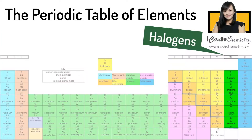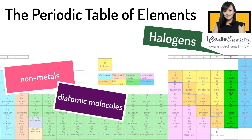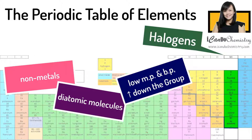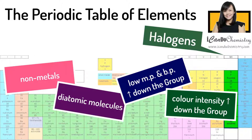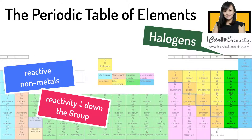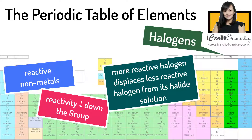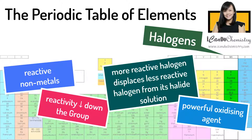In a nutshell, halogens are non-metals and exist as diatomic covalent molecules. Their melting and boiling points are low and increase down the group. These elements are colored and color intensity increases down the group. They are all reactive and reactivity decreases down the group. The more reactive halogen displaces a less reactive halogen from its halide solution. All halogens are powerful oxidizing agents.